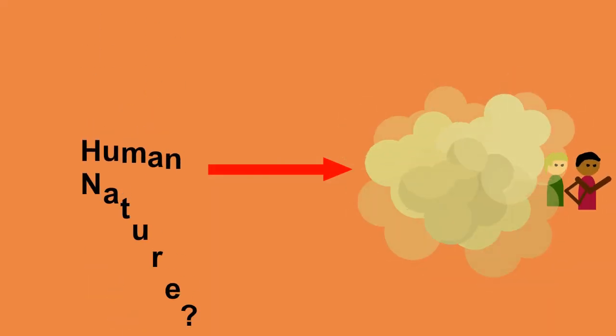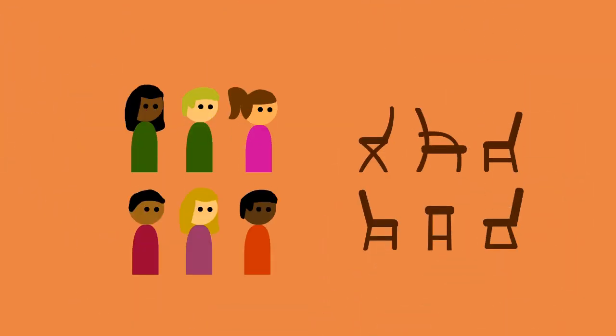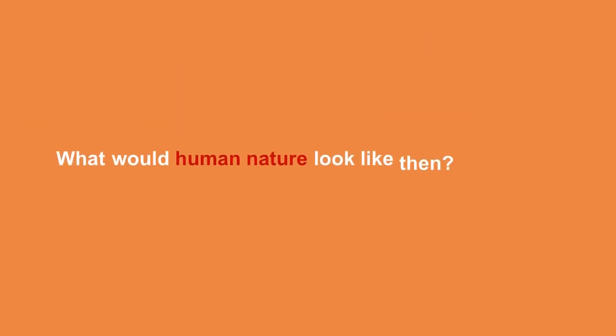Is this free-for-all really human nature, though? Or is it an artifact of the rules of the game? Imagine if there were the same number of chairs as people, and the game were a matter of matching the right person to the right chair. What would human nature look like then?